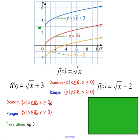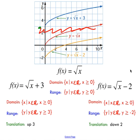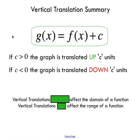The domain is all real X values where X is greater than or equal to zero; the range is all Y values greater than or equal to zero. For the square root function shifted up by three units, the domain stays the same, but the range is now limited to Y values greater than or equal to three. Similarly, for the downward translation, the domain doesn't change, but the lowest Y value possible is negative two. Vertical translations do not affect the domain but can affect the range.